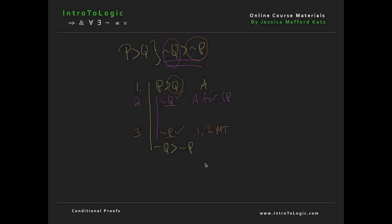According to conditional proof, once we've assumed our antecedent and derived our consequent, we can discharge the conditional. This entails ending our second scope line and writing the antecedent we assumed and the consequent we derived into conditional form: if not q, then not p. We label lines 2 through 3 as the lines used to derive this conditional, then write CP for conditional proof. And there we have our first conditional proof.